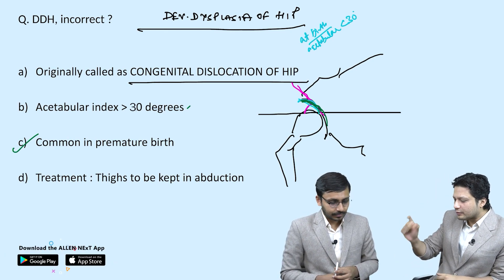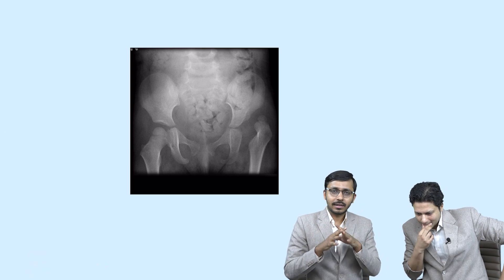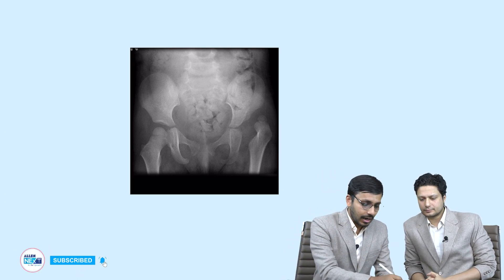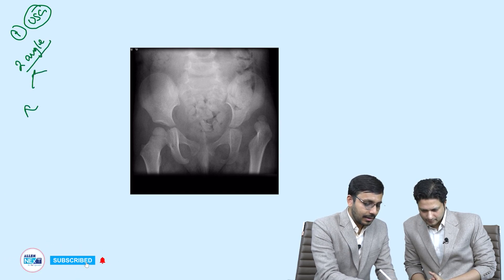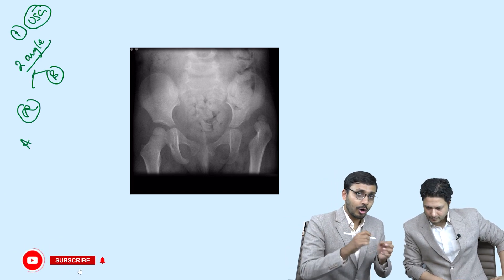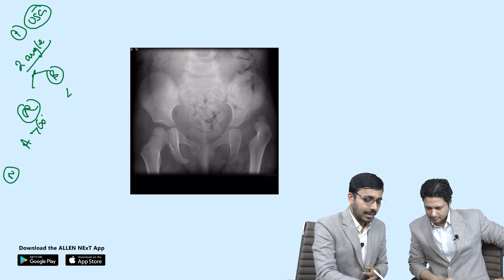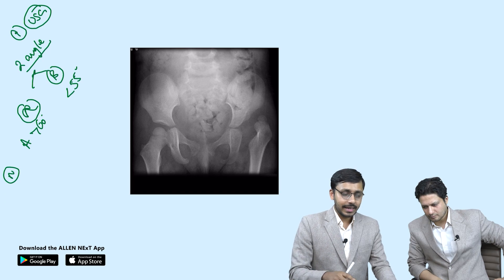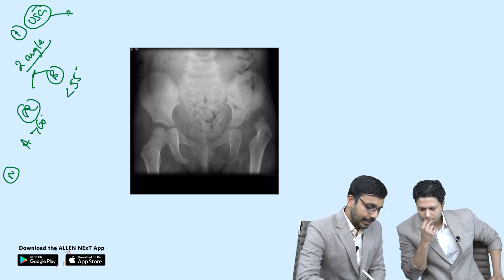Regarding imaging: the modality of choice for screening DDH is ultrasound. On ultrasound, two angles are assessed: alpha angle and beta angle. A mnemonic — alpha means above: normally alpha angle is more than 60 degrees. Beta angle — normally less than 55 degrees. In a normal child, alpha > 60° and beta < 55°.